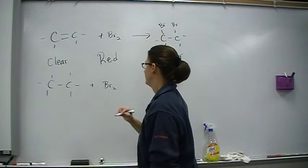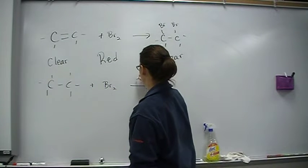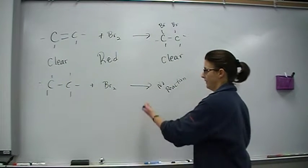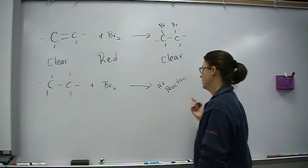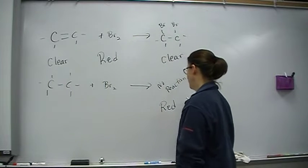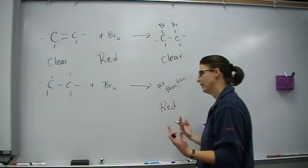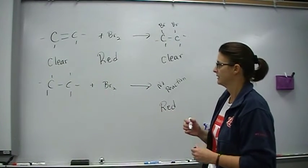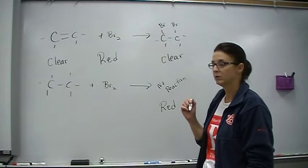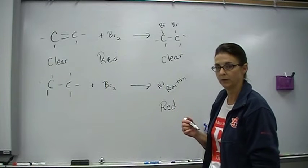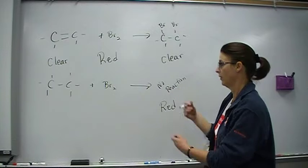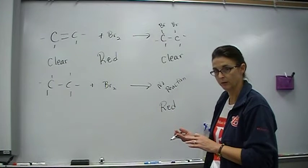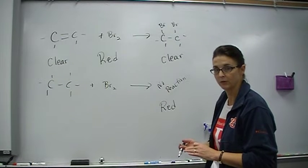When you add bromine to an alkane, you get no reaction. Remember, alkanes are not real reactive. Now if there's the right catalyst, maybe you could. But the product is going to remain kind of, we'll say red. It's probably light red, reddish clear, whatever that would be. But the question I'm going to ask you on a test is, how is bromine used to determine if something is unsaturated? You're going to tell me, you're either going to explain it or draw this. If the product is clear, it was unsaturated. If the product is red, it was saturated.